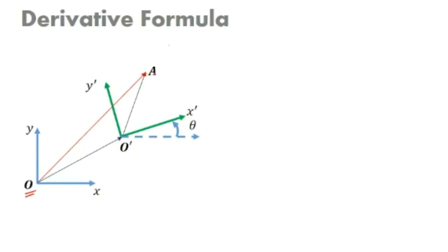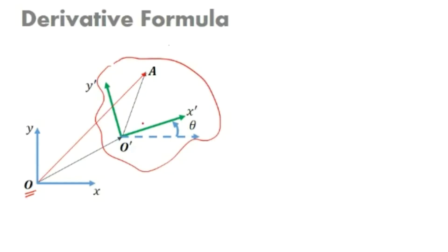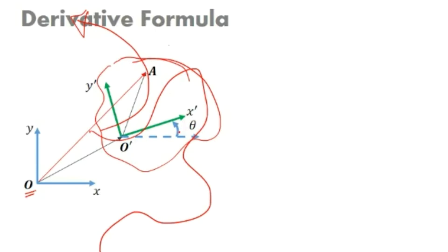Let me reiterate this concept. We have a fixed frame, a body with a point A attached to it, and with time this body is moving — it may move from one position to another. This means the value of theta is changing every time. If theta is changing, then d theta by dt is present. If d theta by dt is present, omega is present.